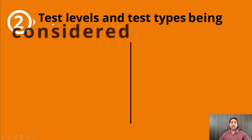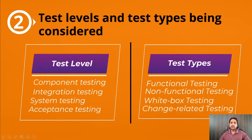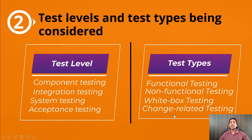The second context factor is test levels and test types being considered. Whether you are at component level, integration testing, system testing, or acceptance testing, the way you test will change at each level, and based on that you select the test process. Similarly, when you perform functional testing, non-functional testing, white box testing, or change-related testing, your approach is different. That's why test level and test type influence the test process.